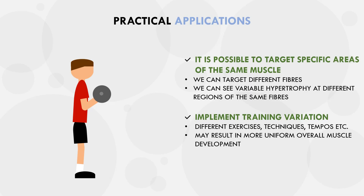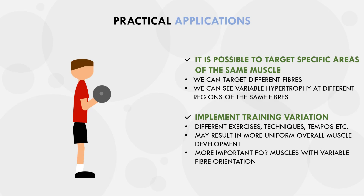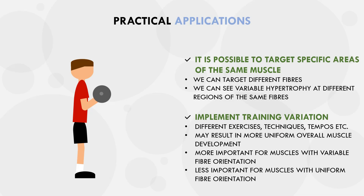Furthermore, providing training variation is probably more important for muscles that have fibers spanning in different directions, like the chest and back muscles, and less important for muscles which have a more uniform fiber orientation, like the biceps or hamstrings.